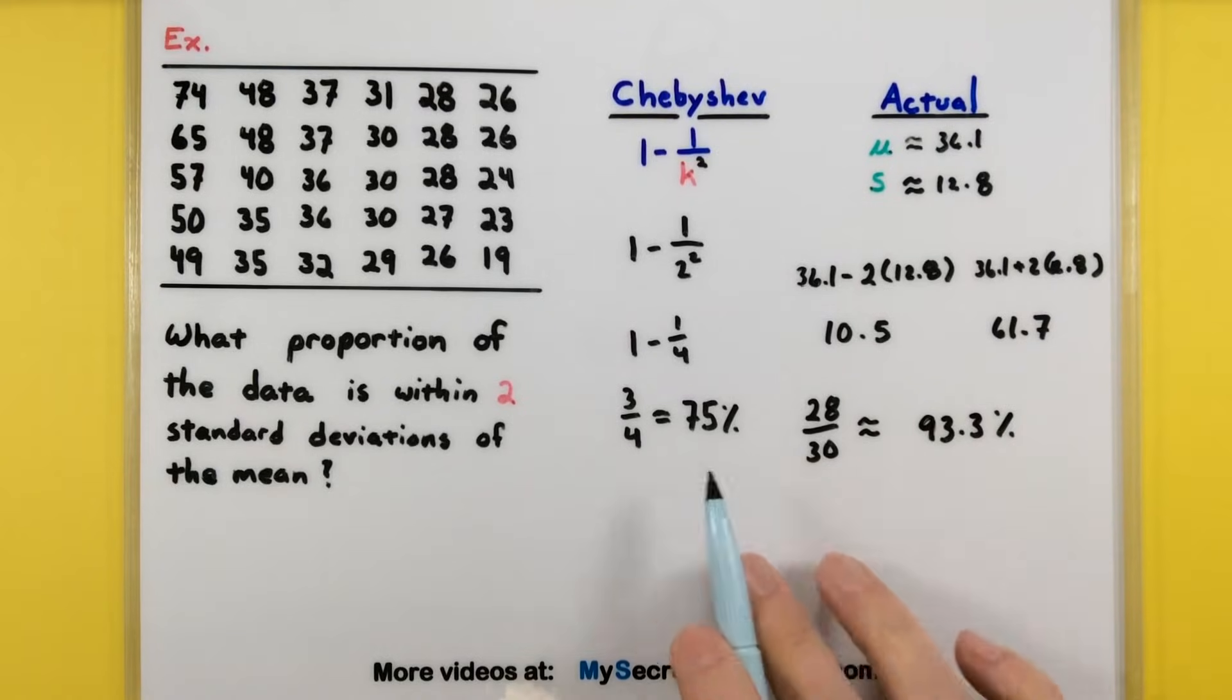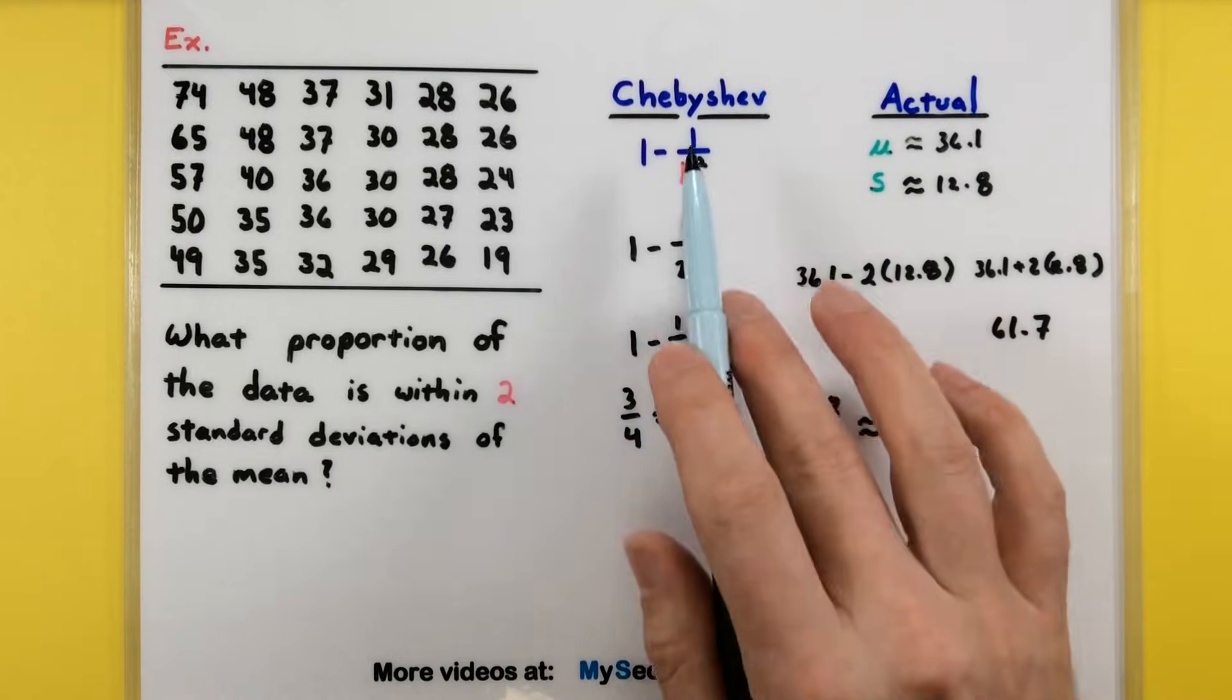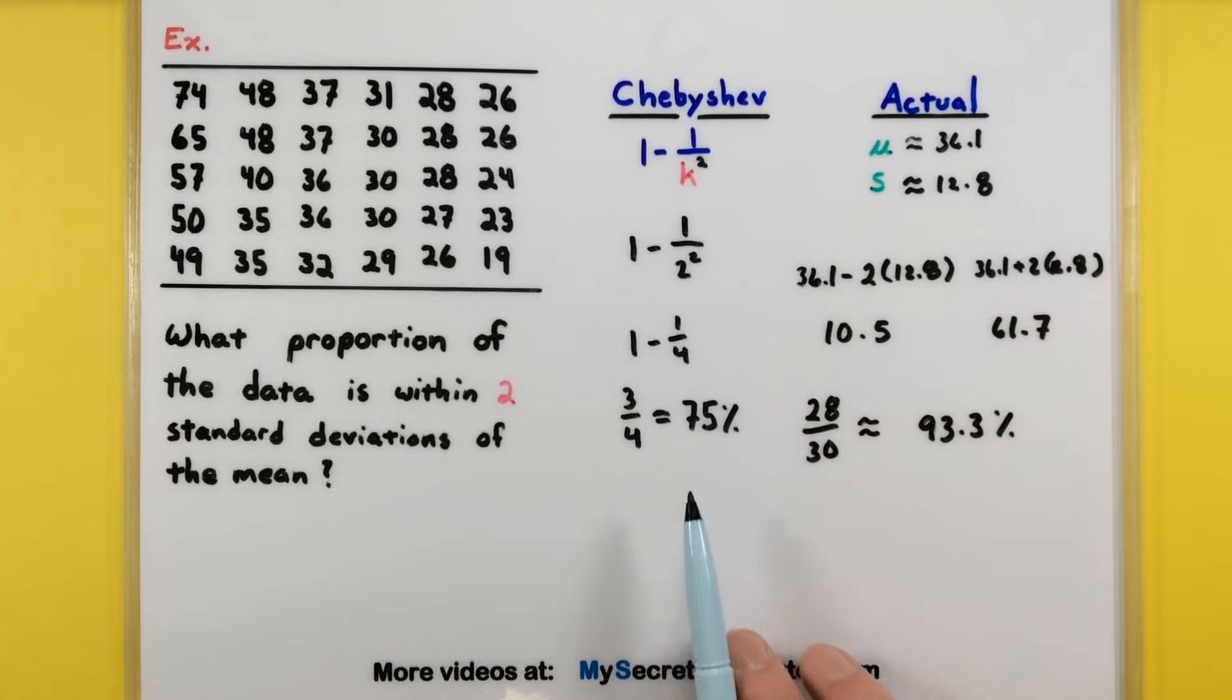So we can really make a comparison between what Chebyshev's theorem says versus the actual. Using this quick and nice formula it said we should expect at least 75 percent and sure enough that's what we're finding. The actual is a little bit higher, 93.3 percent, but it gives us a ballpark. We know at least 75 percent fell within that range.